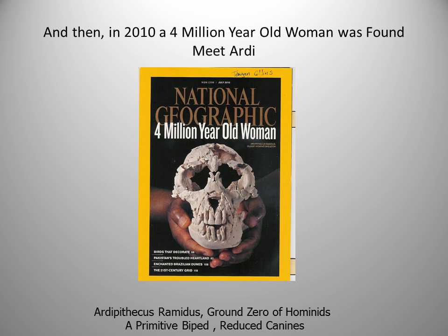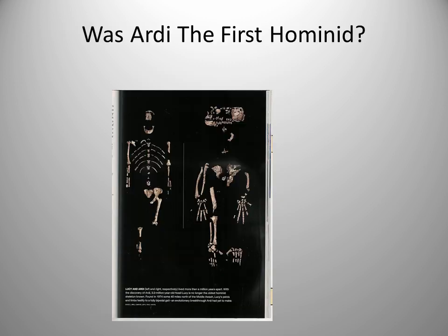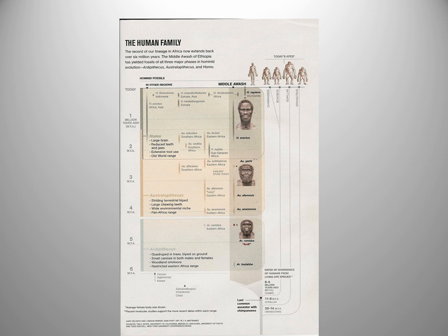This specimen was actually dubbed Ardi — A-R-D-I. It's a 4 million year old woman. Was Ardi the first hominid? This specimen is older than the Australopithecines. You have Lucy on the left, Ardi on the right — very different looking. There's some speculation, but the verdict is still out. We don't have a lot to go on, so they're still working this out.